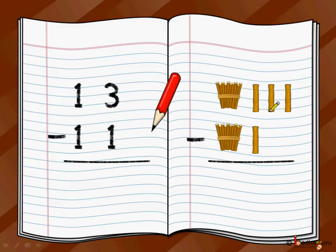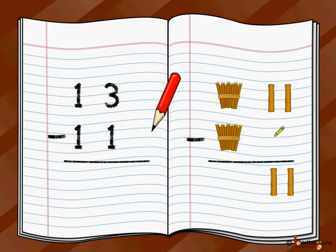First we will do the subtraction of single digits starting from ones place. There are three loose sticks and we want to remove one loose stick from it. So it is three minus one. We just remove one stick from it, so you are left with two sticks. You start with ones position: three minus one is equal to two.